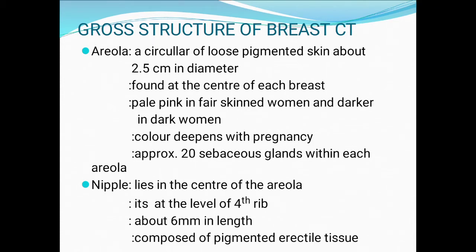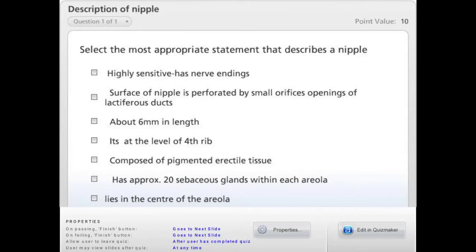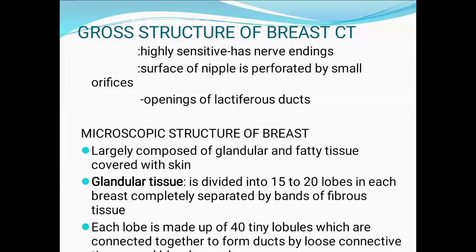Color depends on pregnancy. Approximately 20 sebaceous glands are within each areola. The nipple lies in the center of the areola at the level of the fourth rib, about 6 mm in length, composed of pigmented erectile tissue. It is highly sensitive with nerve endings. The surface of the nipple is perforated by small orifices — openings of the lactiferous ducts.